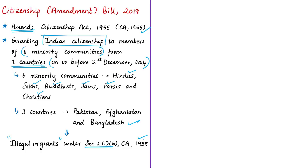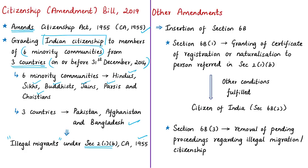Today we will discuss the additional provisions not previously discussed. One such provision is the amendment of Section 6 of the Citizenship Act of 1955, which deals with citizenship by naturalization. A new subsection 6B is proposed to be inserted, providing special provisions for persons covered by Section 2(1)(B) of the 1955 Act. Clause 1 of Section 6B mandates granting a certificate of registration or naturalization to such persons.